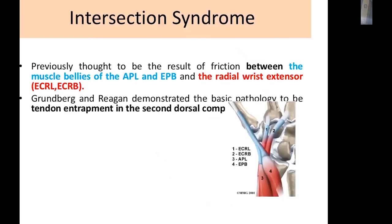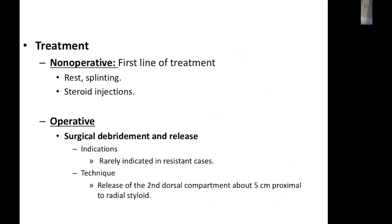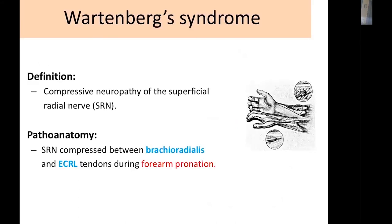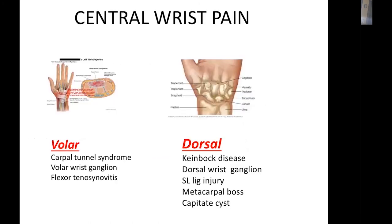Intersection syndrome is entrapment of the second dorsal compartment, or between the muscle bellies of the first and second compartments, treated similarly to De Quervain's — initially by non-operative treatment, and later by release and debridement. Wartenberg syndrome is compressive neuropathy of the superficial radial nerve, associated with paresthesia and hypoesthesia. It is also treated initially by non-operative management — rest, activity modification, splints — with surgical decompression reserved for failed conservative treatment.